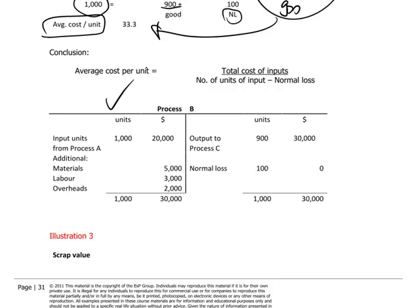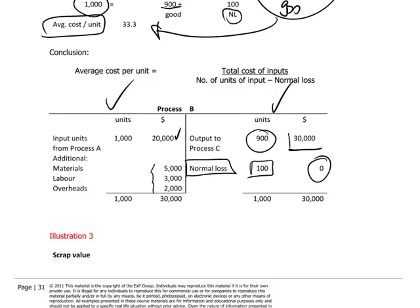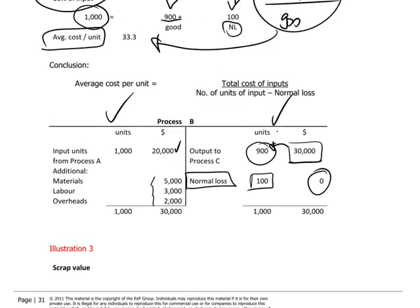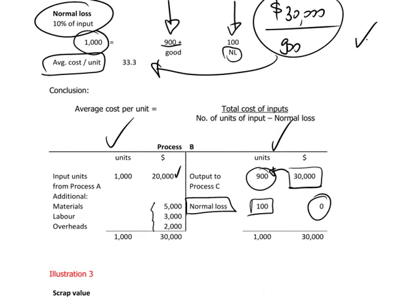We can look at the process account to capture this outcome. The left side is as before: introducing 1,000 units with $20,000 of accumulated costs, and adding $10,000 in production costs in Process B. What's different is the right side: output to Process C is 900 units, and we disclose separately normal loss of 100 units. There is no scrap value, so these normal loss units are zero in value, meaning the full $30,000 is borne exclusively by the 900 good units.